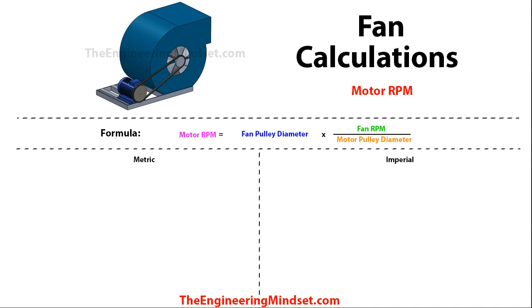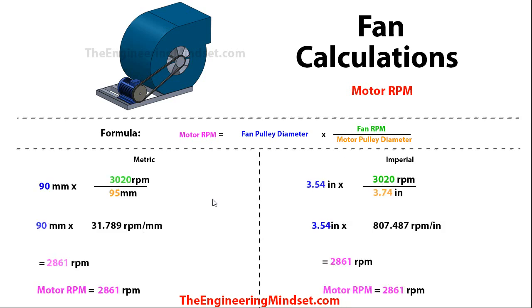We can also calculate the motor RPM using this formula: motor RPM = (fan pulley diameter × fan RPM) ÷ motor pulley diameter. Dropping in the numbers gives 2861 RPM on both metric and imperial sides. You can calculate these or look them up from the manufacturers.